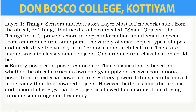Smart objects can be divided into different classifications. The first classification is battery-powered or power-connected smart objects. This classification is primarily based on whether or not the object incorporates its very own energy supply or receives non-stop power from an exterior power source. Battery-powered objects can be moved more easily than line-powered objects; however, batteries restrict the lifetime and the quality of power that the object is allowed to consume, which affects transmission range and frequency.